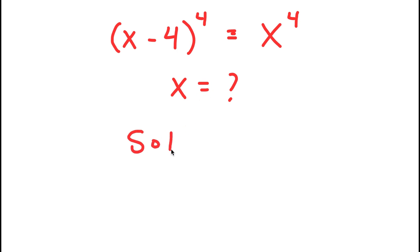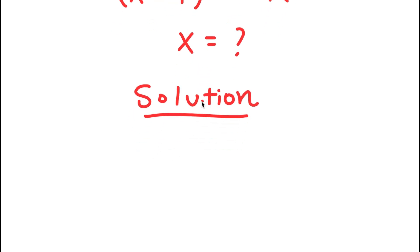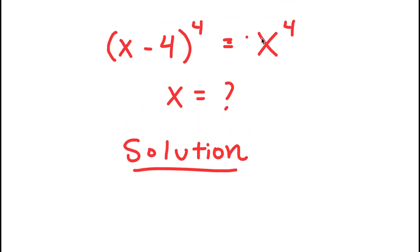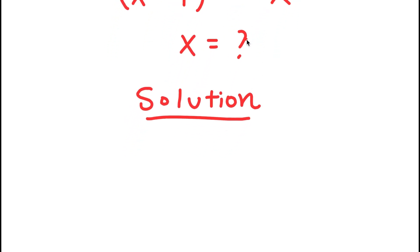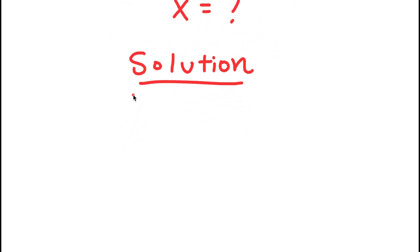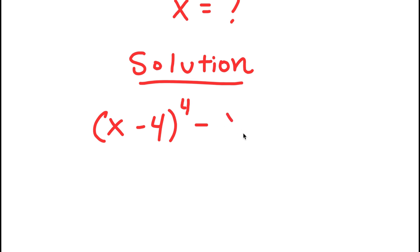For my solution to this problem, I'm first going to start by subtracting x to the power of 4 on both sides. So I get x minus 4 to the power of 4 minus x to the power of 4 is equal to 0.